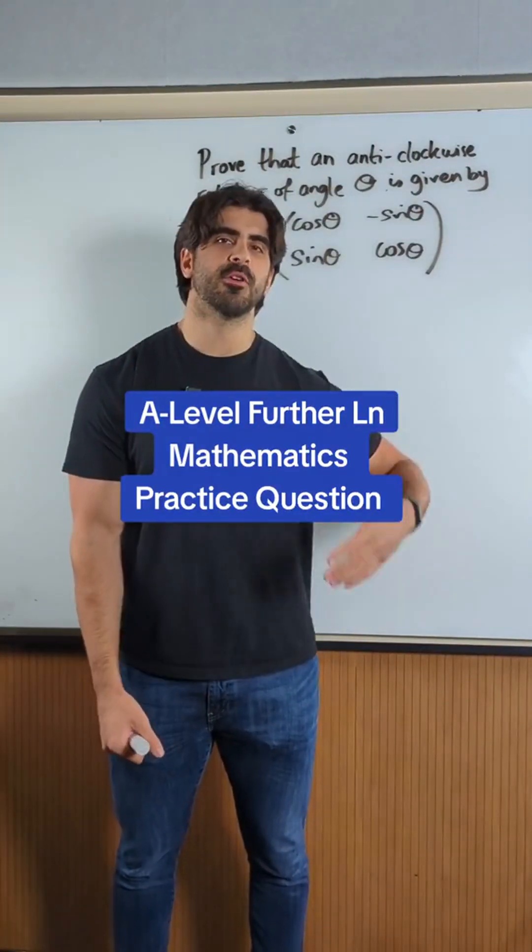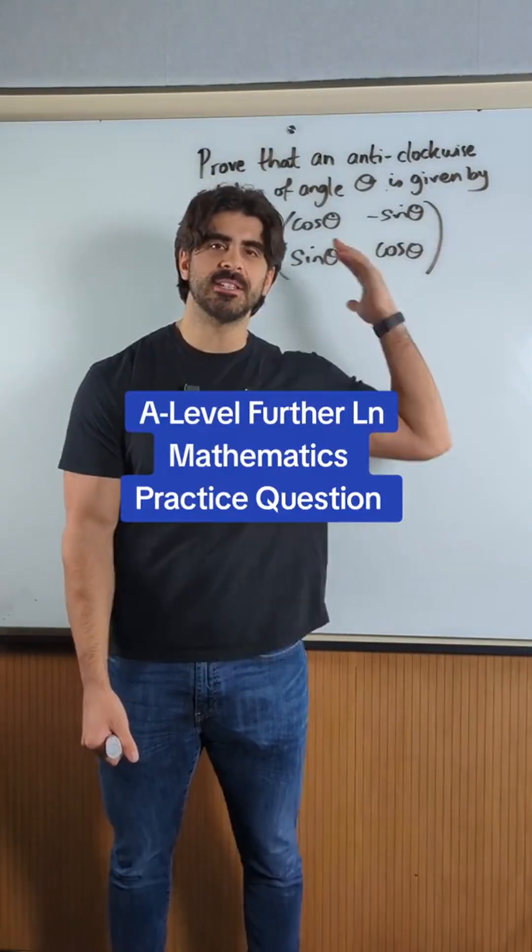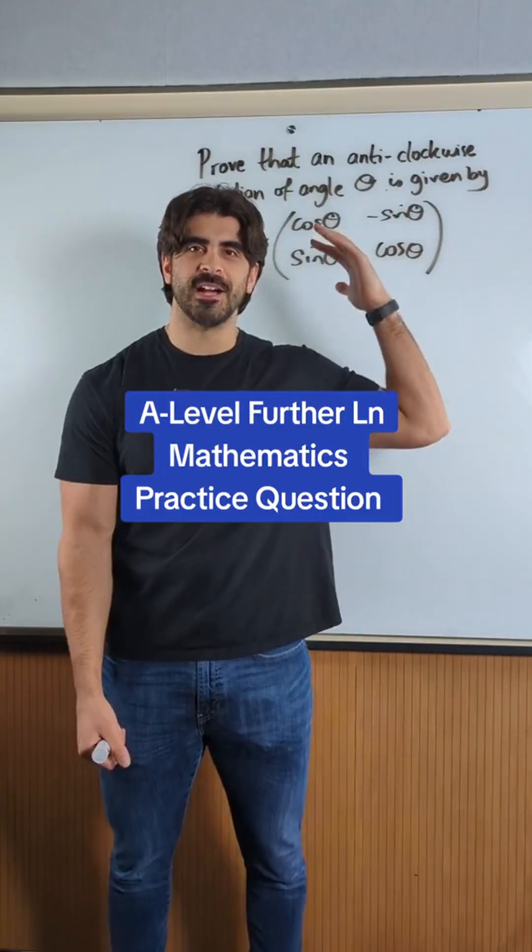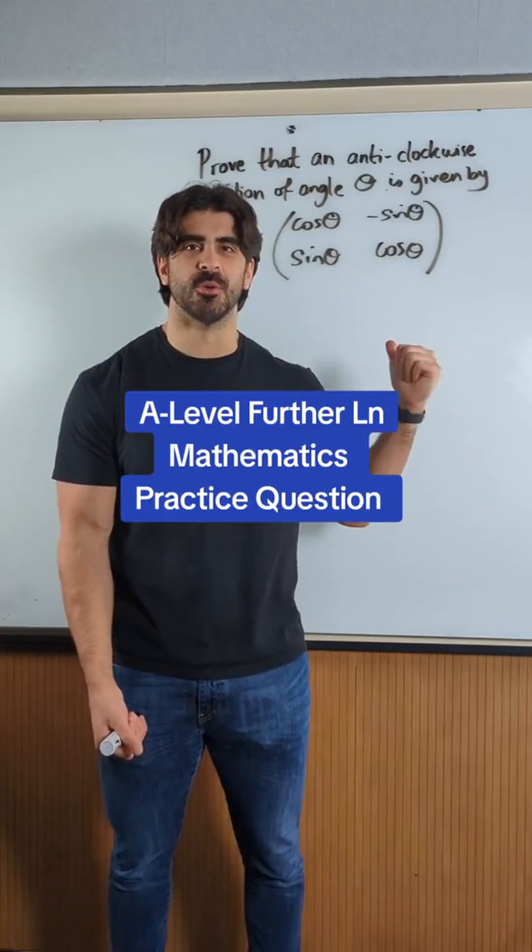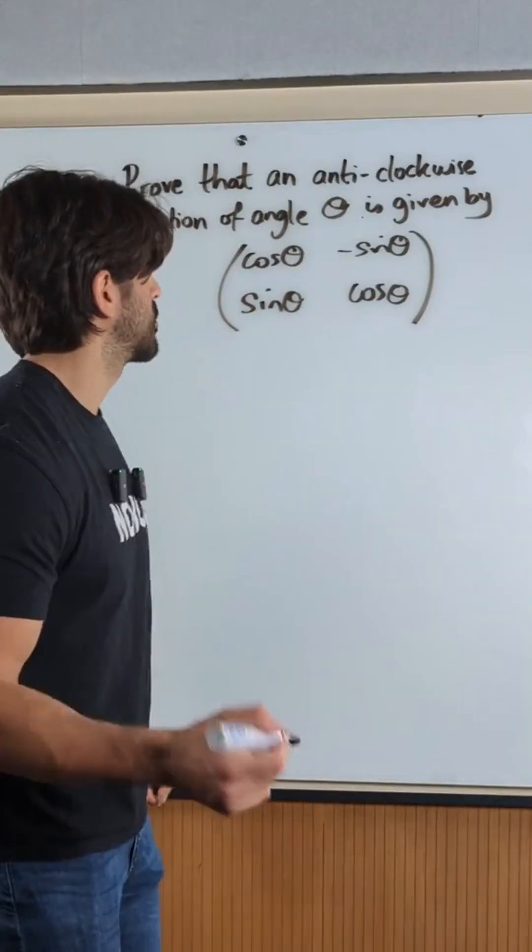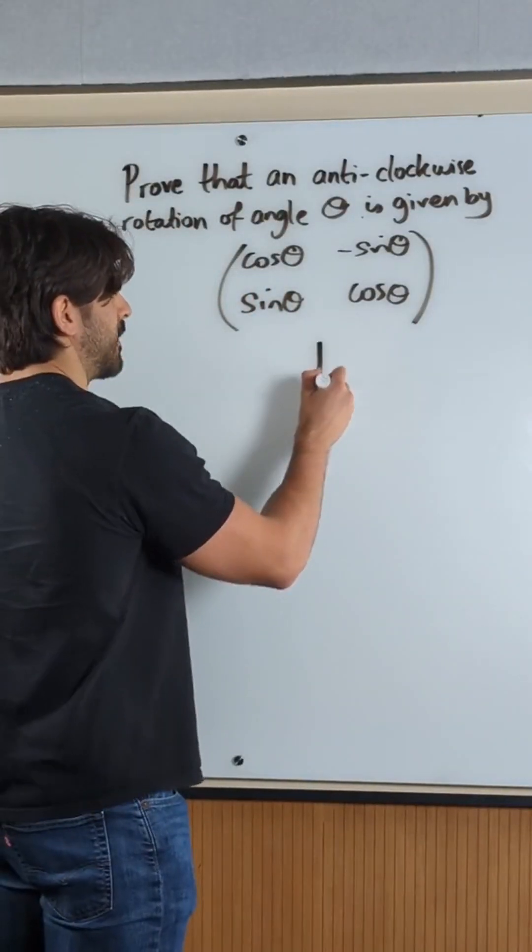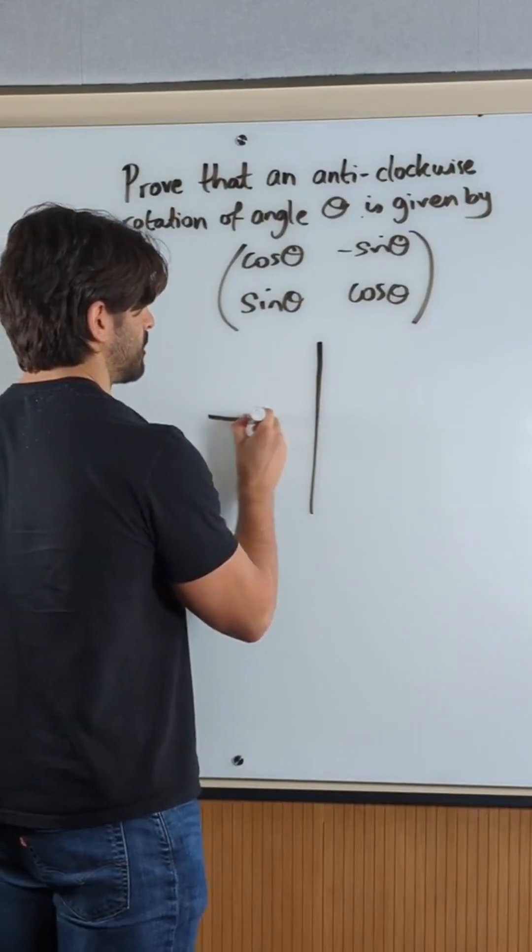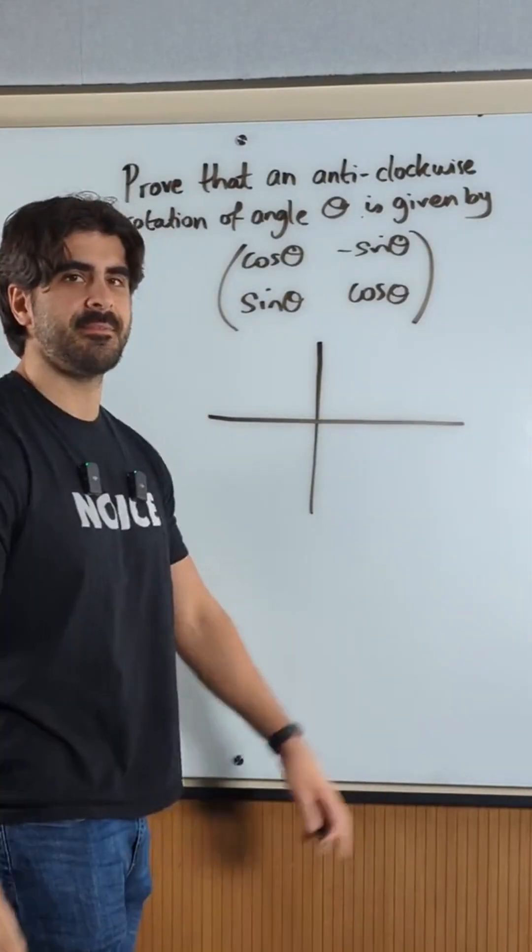Prove that if you rotate anything theta degrees anti-clockwise, this is the matrix to do it. Now, to prove or find any transformation, you look at the identity matrix.